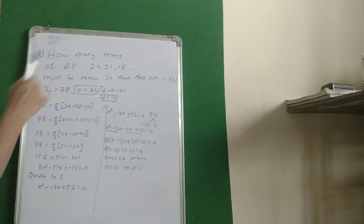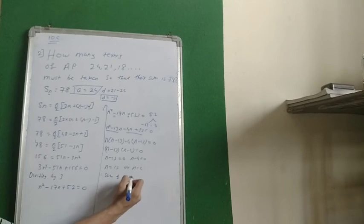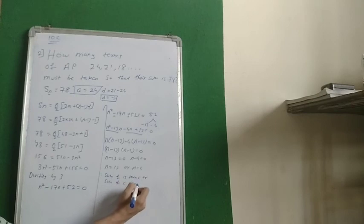So what was the question? How many terms of AP must be taken so that the sum is 78? Therefore, you can say that sum of 13 terms or sum of 4 terms is 78.